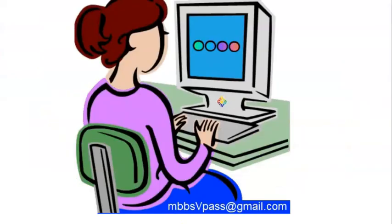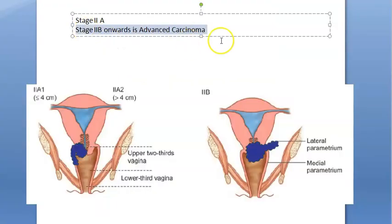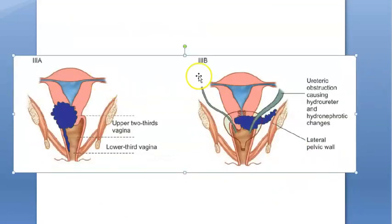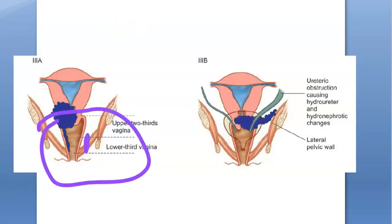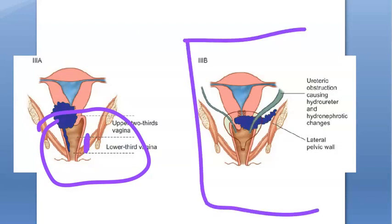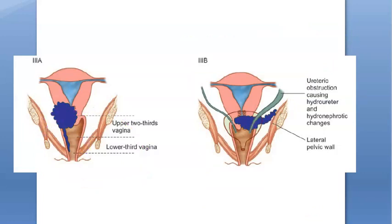After Stage 2b onwards it is called advanced carcinoma. Stage 3 has only 3a and 3b with no further subtypes. Stage 3a: tumor involving the lower third of vagina with no extension to the pelvic side wall. Stage 3b: tumor extending to the pelvic side wall, and/or hydronephrosis or non-functional kidney.